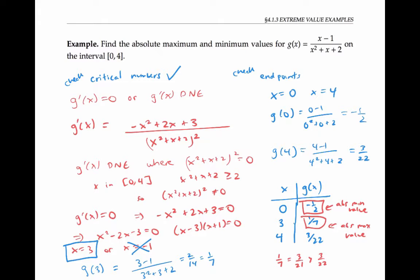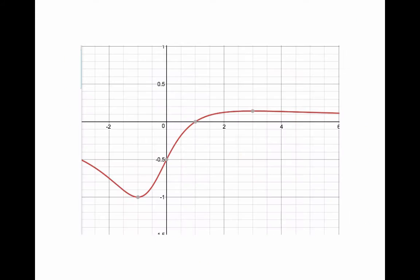We can confirm this by looking at a graph of our function g. We're just interested in the interval from zero to four, so just this section of the graph. It does look like the minimum value is at x equals zero with a value of negative one half, like we found, and the maximum value looks like it's somewhere around x equals three with a value of about one seventh. The graph confirms what we found using calculus.